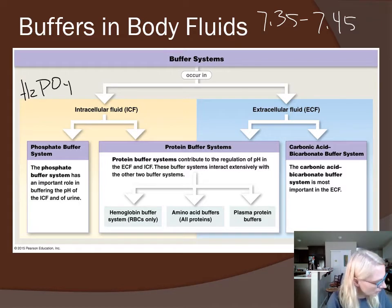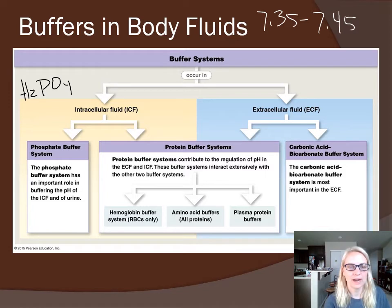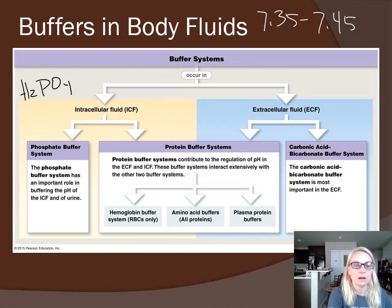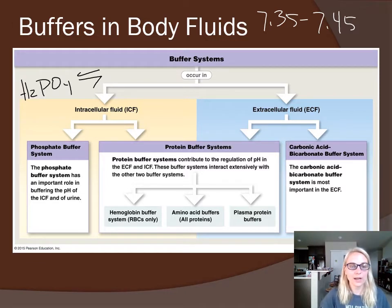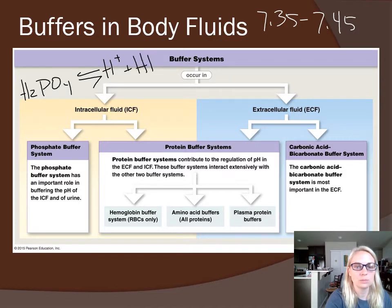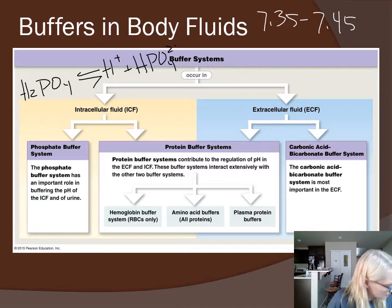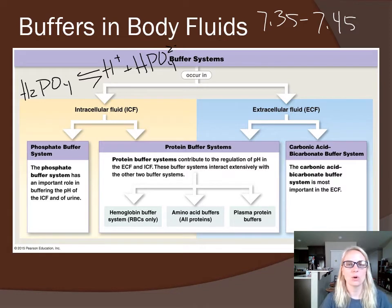We have H₂PO₄⁻, dihydrogen phosphate, in a reversible reaction: H₂PO₄⁻ ⇌ H⁺ + HPO₄²⁻. Because this reaction can go in both directions, it functions as a buffer.